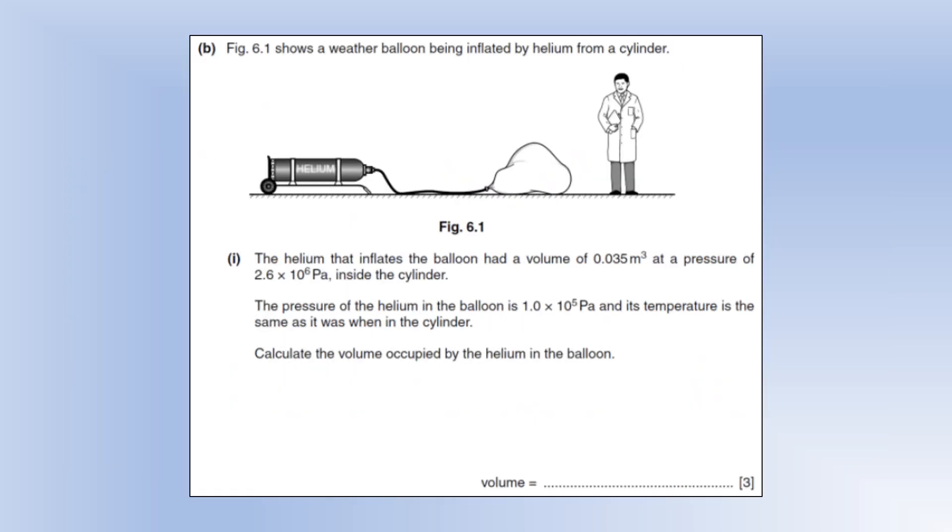Okay, so the diagram shows a weather balloon being inflated by helium from a cylinder. The helium that inflates the balloon has a volume of 0.035 meters cubed at a pressure of 2.6 times 10 to the 6 pascals. The pressure of the helium in the balloon is 1 times 10 to the 5 pascals, and the temperature is the same as it was when it's in the cylinder. Calculate the volume of the helium in the balloon. So the key statement we saw there was that the temperature is constant, and that allows us to apply Boyle's law. And what Boyle's law says is that at constant temperature, pressure times by volume is a constant, or the pressure times volume initially is equal to the pressure times volume at the end.